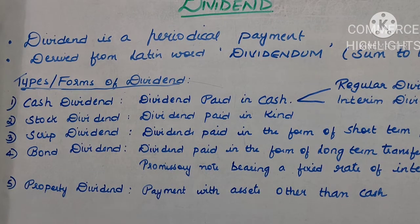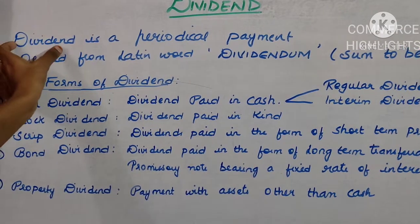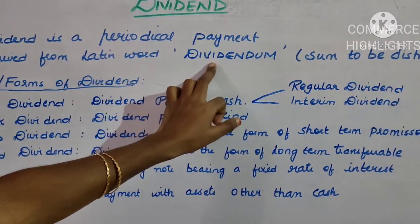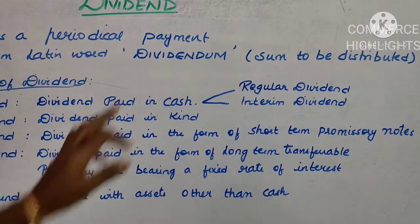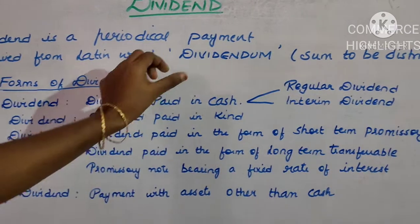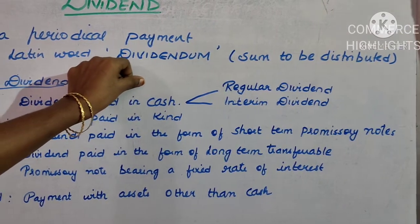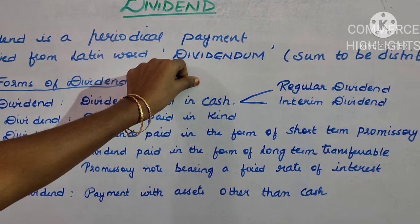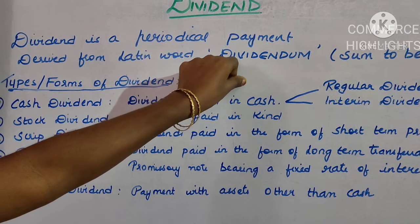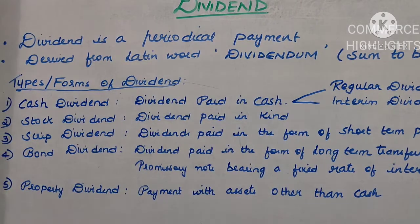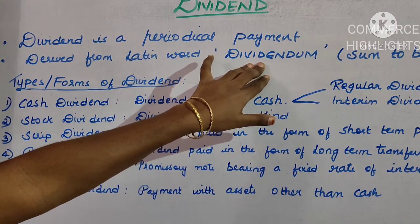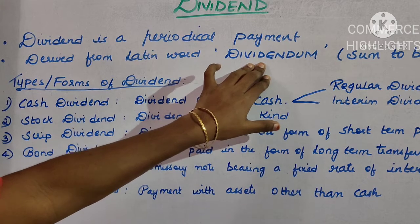The word dividend is generally derived from a Latin word 'divendum', and this divendum means 'sum to be distributed'. So dividend is the sum which is to be divided among the shareholders on the basis of their investment. Dividend is any amount to be distributed to the shareholders on the basis of their investment.